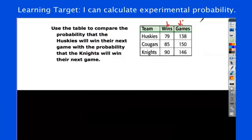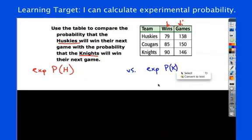The table is giving us wins and total number of games. So, we're basing this on who has the better win record. Who has won more games in the past? If a team has won more games in the past, the data is telling us that that team is more likely to win in the future. So, you're doing two different probability problems here. You're going to do the Knights, and you're going to do the Huskies. So, experimental probability of the Huskies versus experimental probability of the Knights. Go ahead and pause the video, work your way through this, and then hit play when you're ready for the solution.